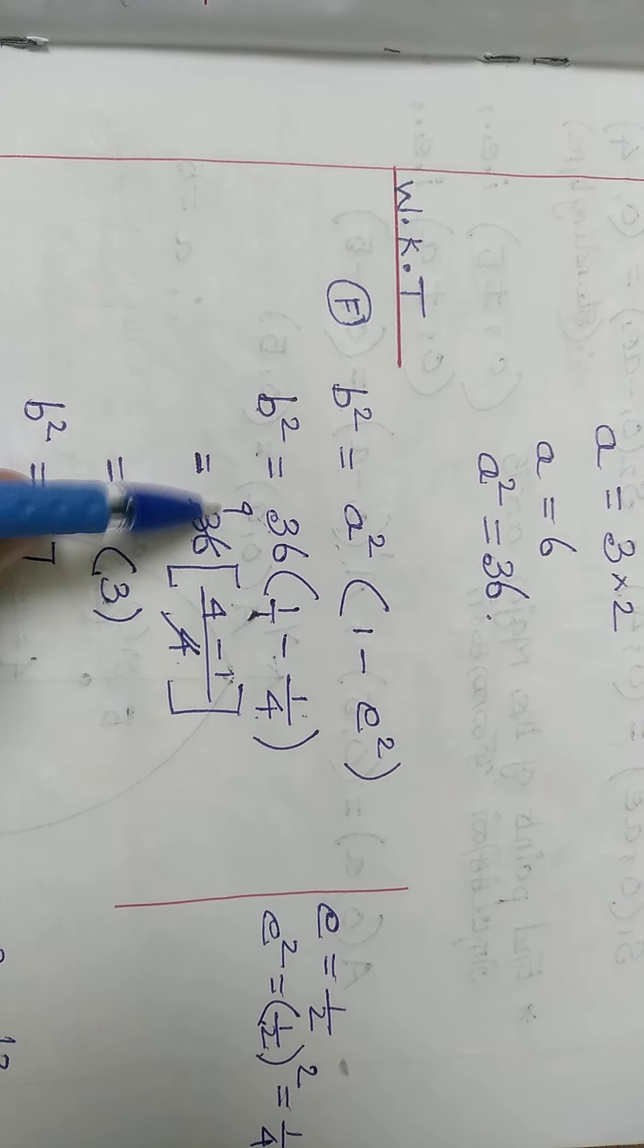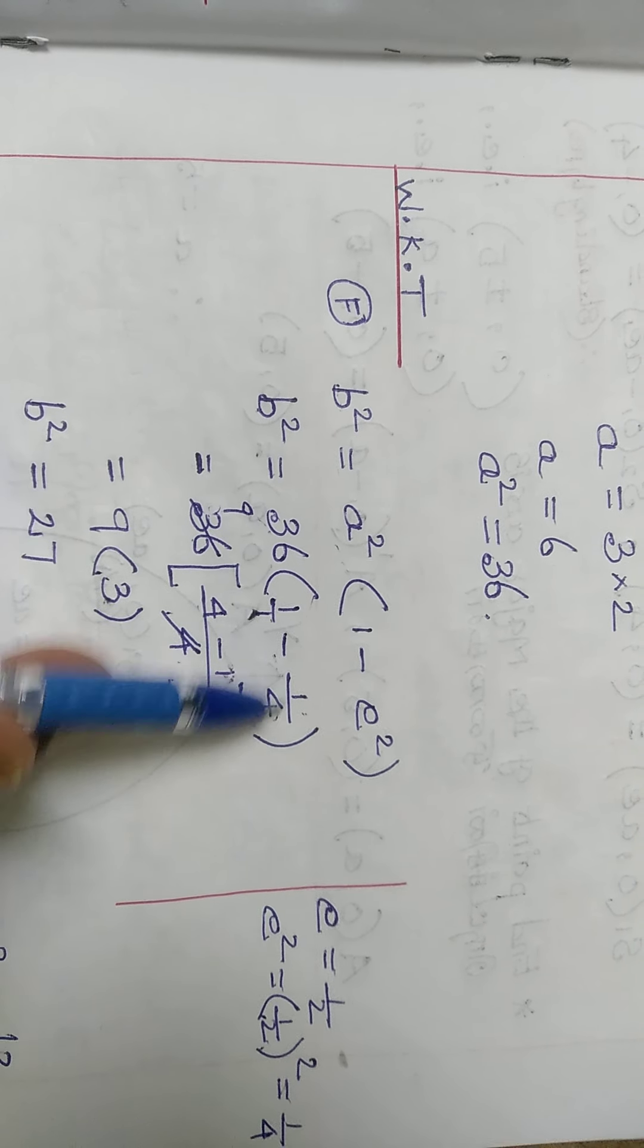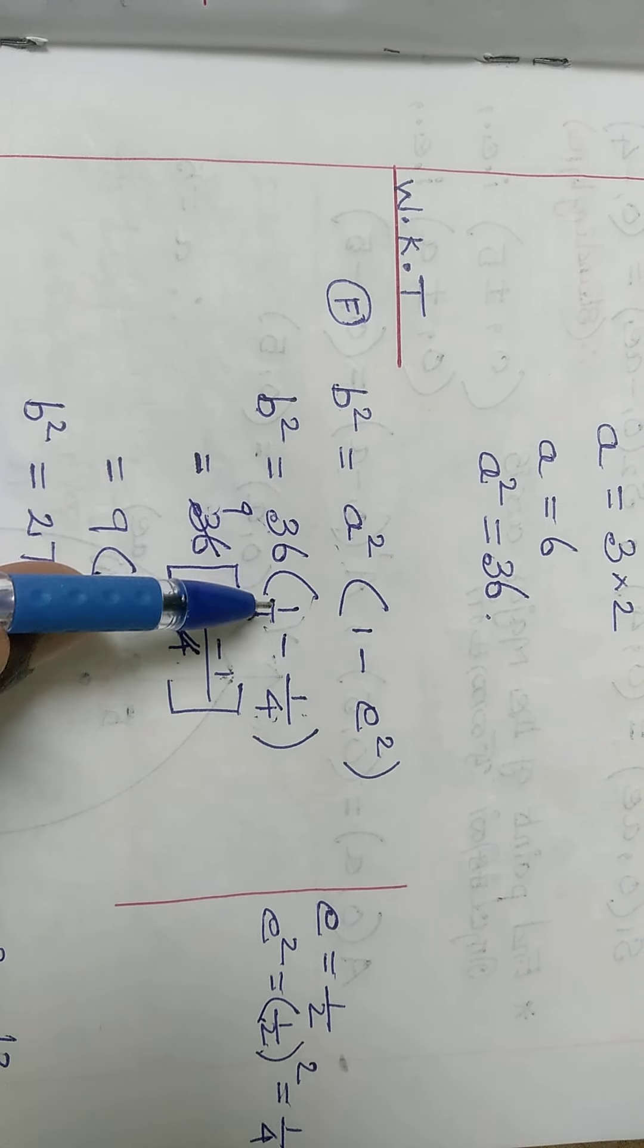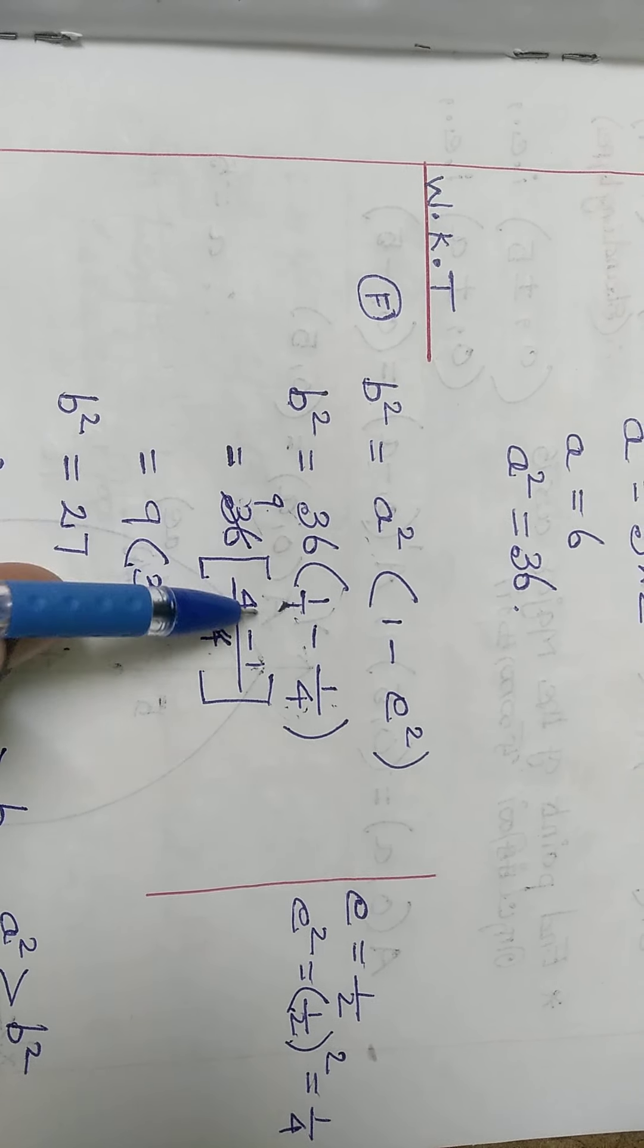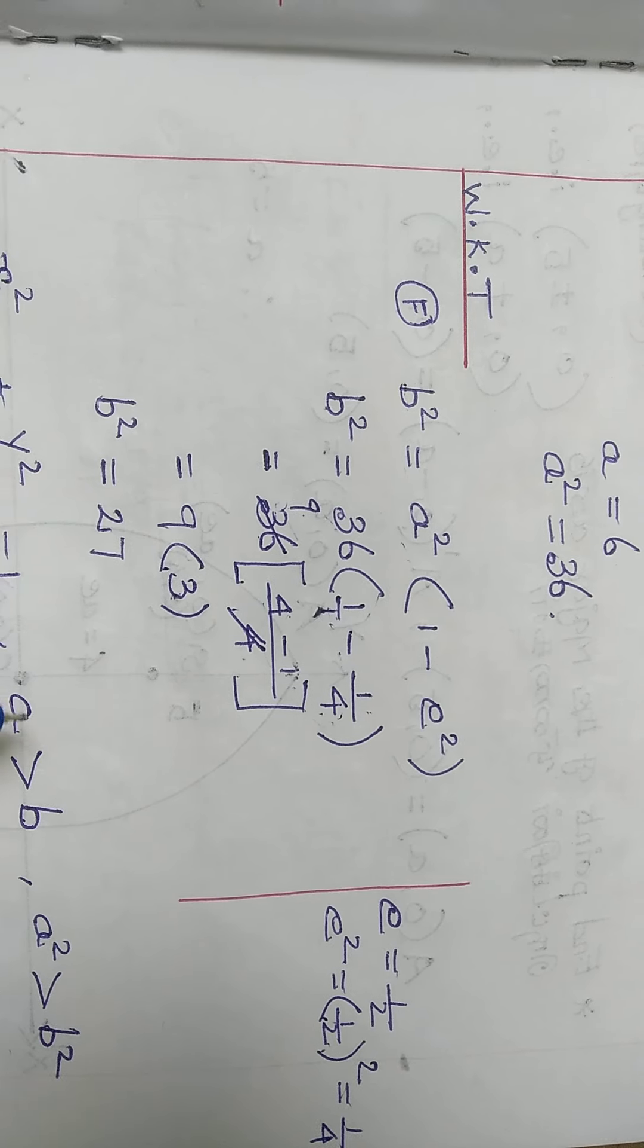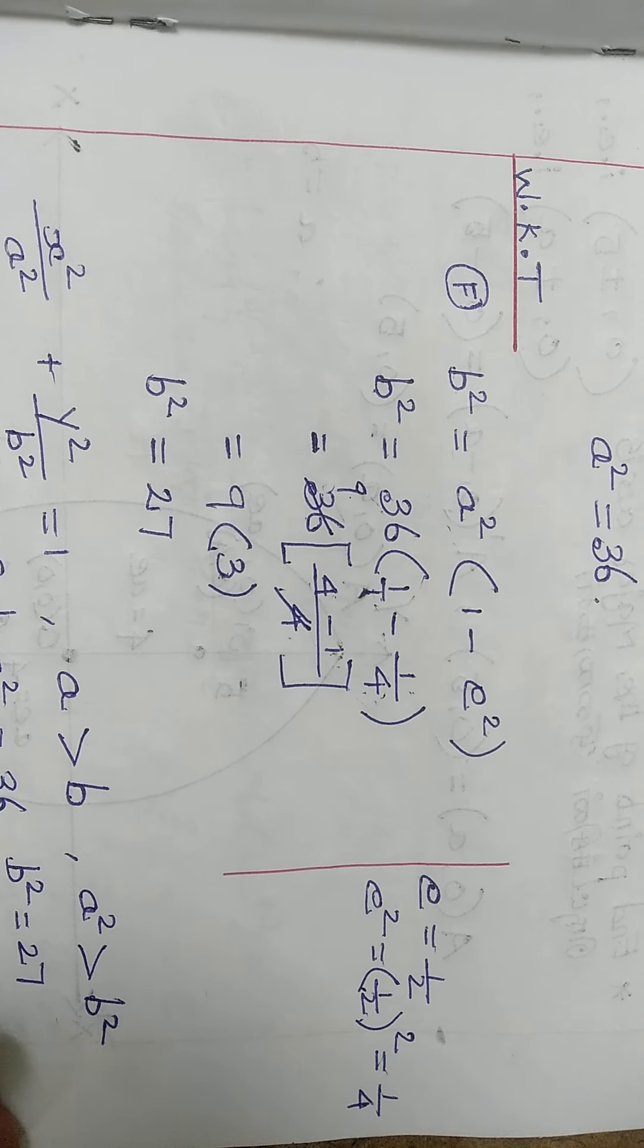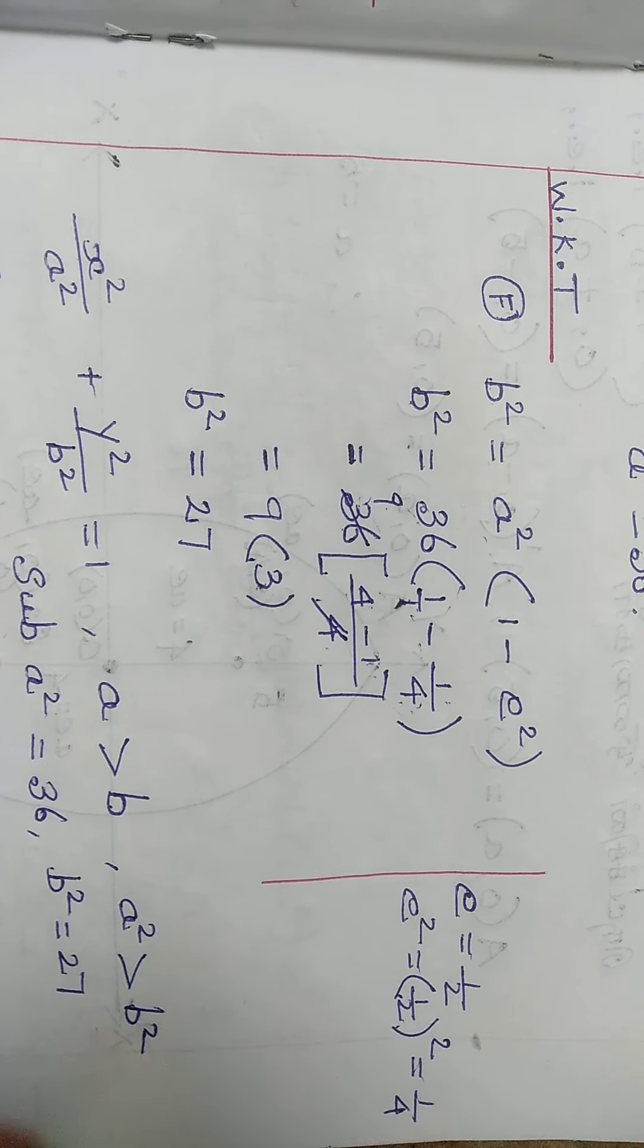After cross multiplication, 4 times 1 is 4 minus 1 times 1 is 1, divided by 4. Then 9 times 4 is 36. Simplifying, 4 minus 1 is 3, 9 times 3 is 27. So b squared is 27.